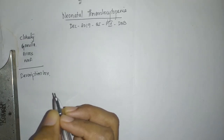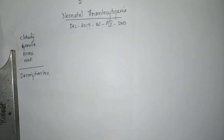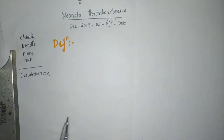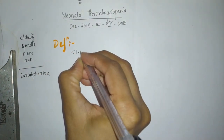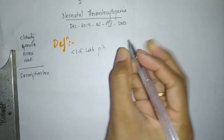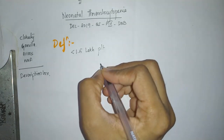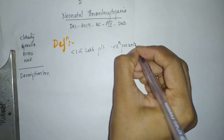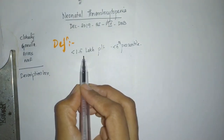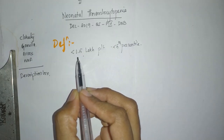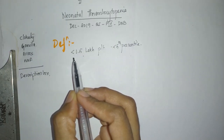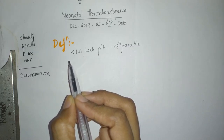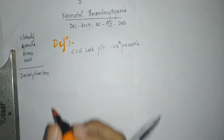So if a question on neonatal thrombocytopenia is asked, you will start with a definition or an introduction. What is the definition? Anything less than 1.5 lakh platelets is called neonatal thrombocytopenia. This corresponds to the 5th percentile in adults. Practically, depending upon the gestational age, the 5th percentile will come down as gestational age reduces. But for theory, this is more than enough — less than 1.5 lakh.